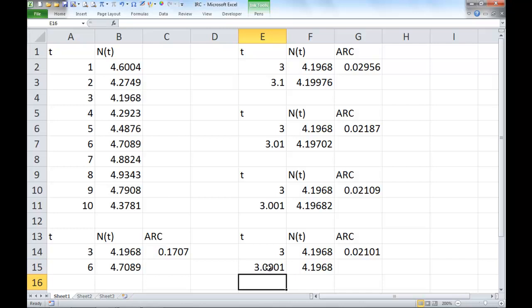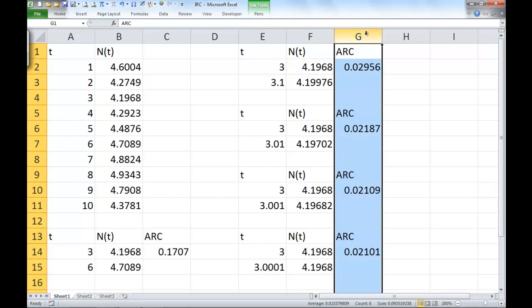So each of these tables has an average rate of change between 3 and a number close to 3. If you look down each of these tables, the second t value is closer and closer to the 3. What pattern might we see in the average rate of change values? As the t values get closer and closer, the average rate of change goes from 0.029 to 0.021, and it stays at 0.021, and it still stays at 0.021.